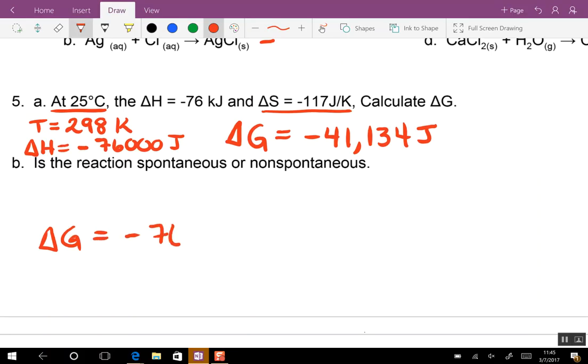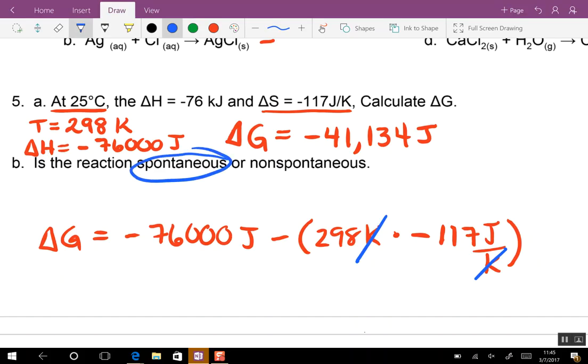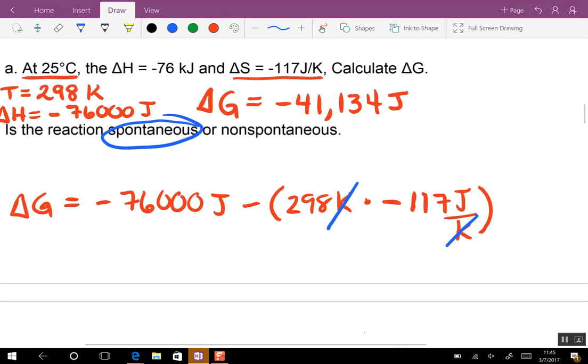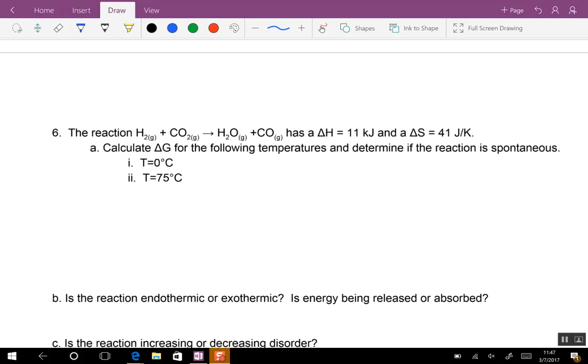We figured out delta G. Don't forget to cancel things. We got Kelvin, Kelvin cancel, so our units left are just joules. Now, is the reaction spontaneous or not spontaneous? It's spontaneous because it's negative.